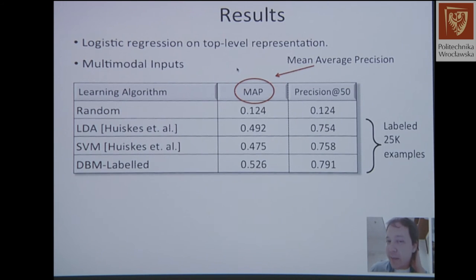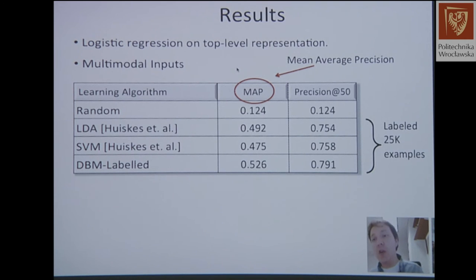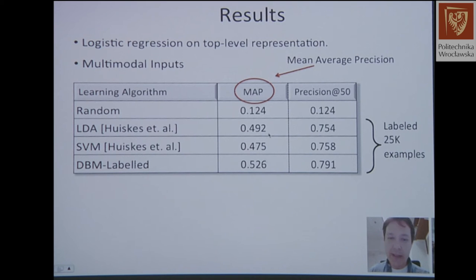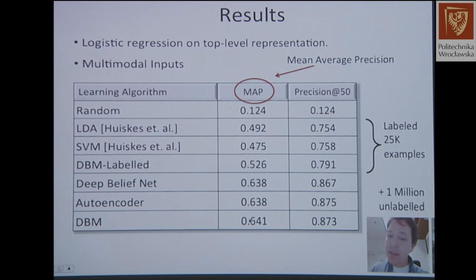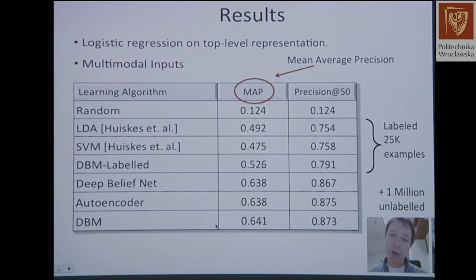In terms of mean average precision — classification averaged over multiple classes — working only with 25,000 labeled examples, you can improve upon SVMs and LDA-type models. More exciting is that adding one million unlabeled examples gives huge gaps in improvement across autoencoders, deep belief networks, and deep Boltzmann machines. That was very exciting because it shows that unlabeled data, at least for this example, was helping us.